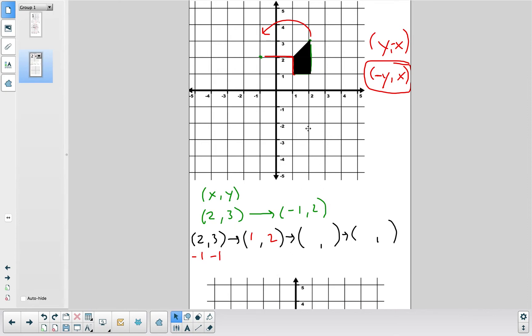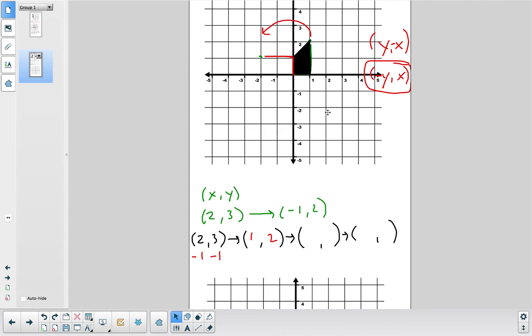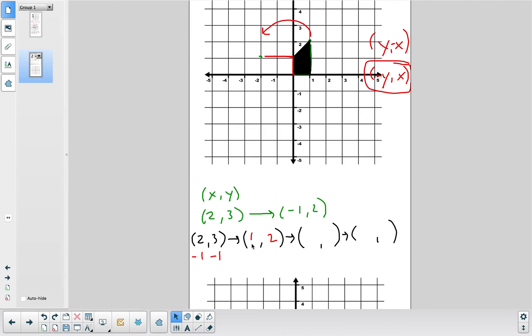So now we moved our coordinate point to the origin. It should be at 1 comma 2. Well, if you look at my point, 1 in the x direction, 2 in the y direction. So now we are at 1 comma 2. And so now we can apply this formula to it.